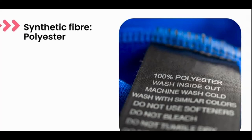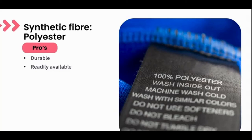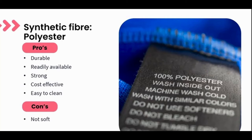Starting with polyester — made from a chemical reaction with petroleum. It's a high-performance fabric but not commonly used alone; you'll often hear the term 'polyester blend.' Pros: durable, strong, stretchy and flexible, readily available, cost-effective, easy to clean, and has great resistance to fading, wrinkling, and abrasion. Cons: not as soft as natural fibers, and not a sustainable or biodegradable product. There are far more pros than cons to polyester, making it a really nice fabric for lower-cost installations.